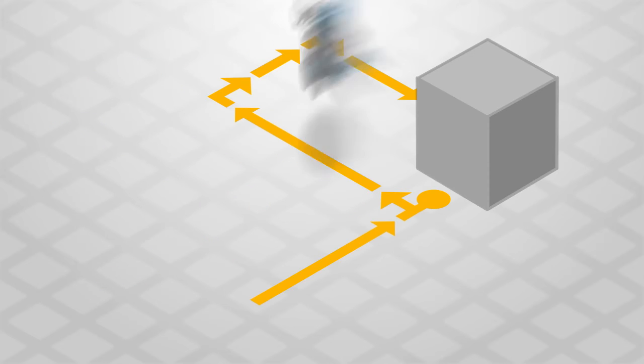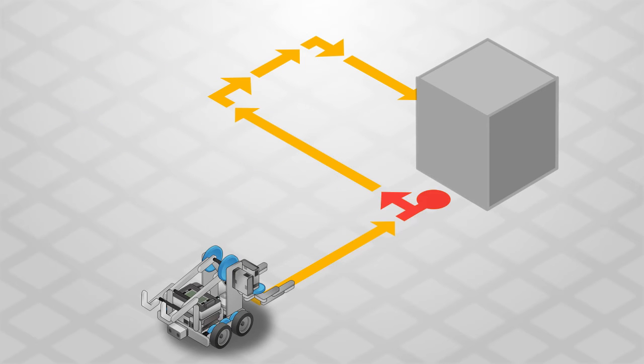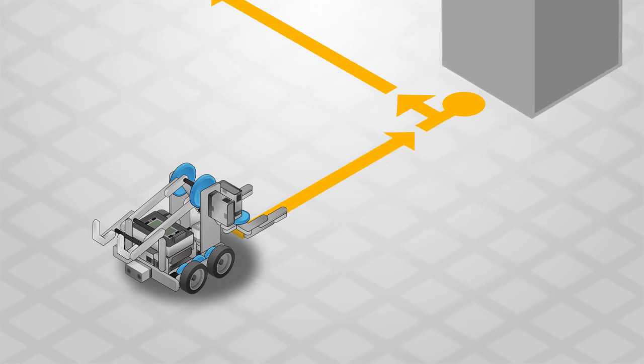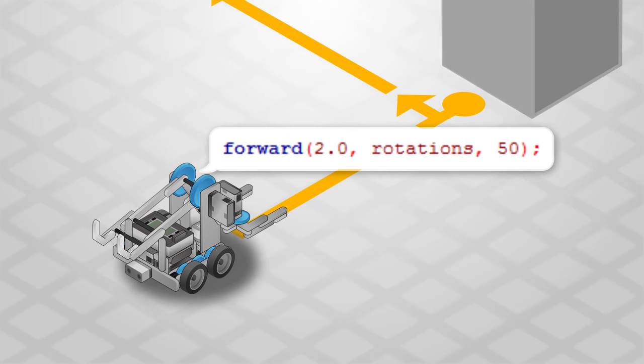Can these behaviors be expressed as commands? Some of them can. Robot C has a command to move forward two rotations, so you can say this part in terms the robot will understand.